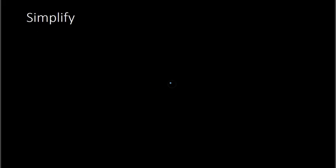Here are a couple of examples. First, we see 25 over 30. I can think of 25 as 5 times 5, and 30 is 5 times 6. Because they both have a 5 in common on the top and bottom, we can simply divide the 5s and we have 5 over 6 as my answer. Next we have 22 over 33. 22 would be 2 times 11, and 33 is 3 times 11. I can divide the 11s out, so I'm left with 2 over 3 as my solution.